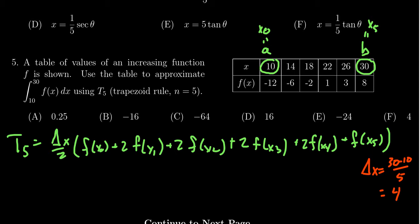If you look at that you can see that 10 plus 4 is 14, this is my x1. Plus 4 is 18, that's going to be x2. Plus 4 is 22, that's going to be your x3. Plus 4 is going to be 26 which is x4, and then plus 4 again gives you 30.